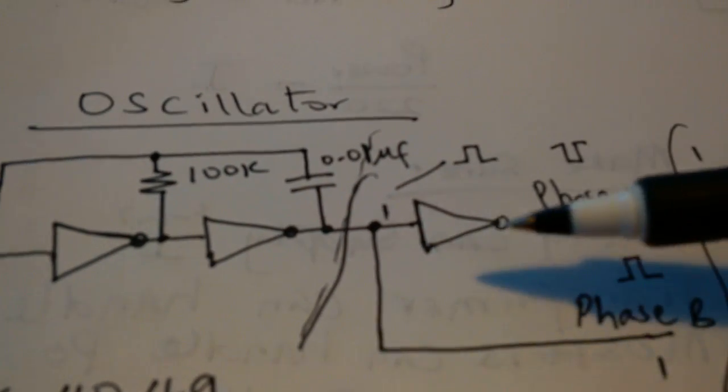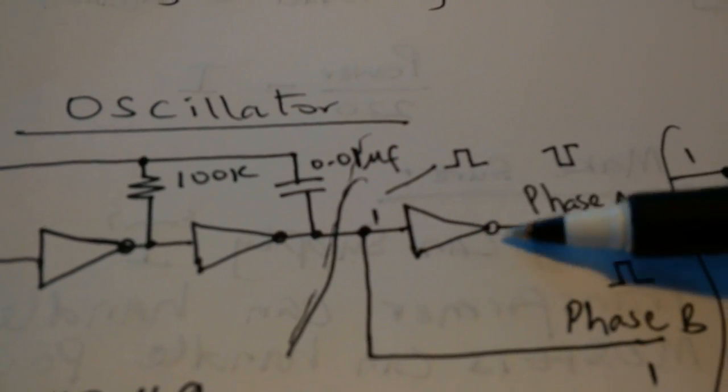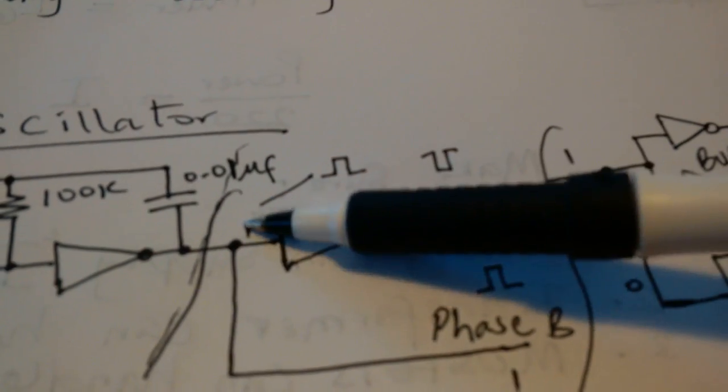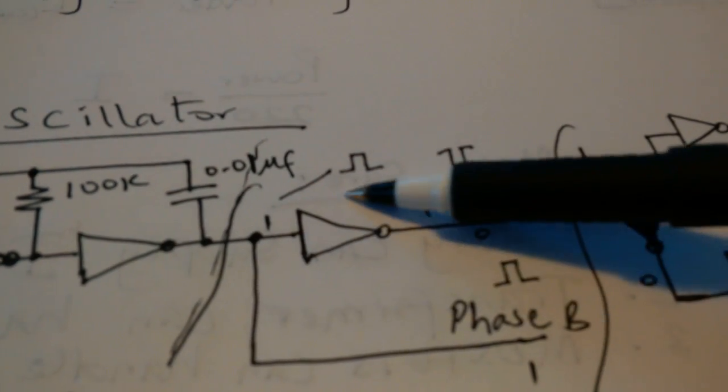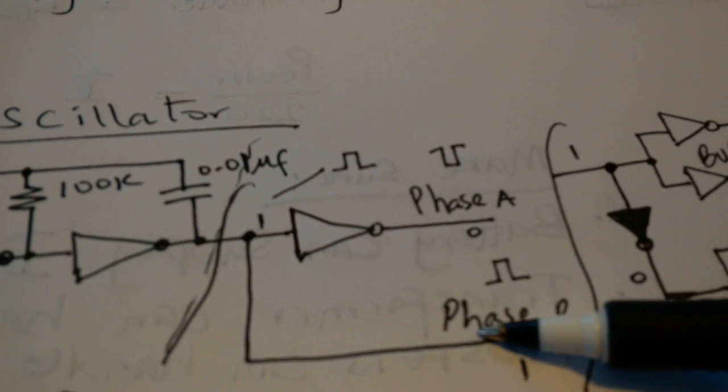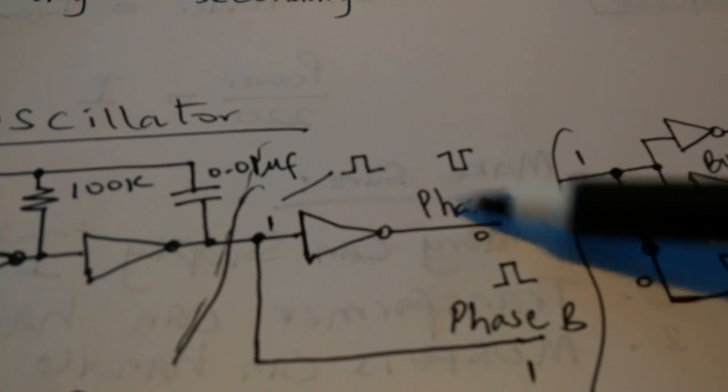For this circuit, when this output is one, this inverter here will change the signal and it will be zero. And this one will show up here as one. So because it goes straight, there's no inverter in this path, but there's inverter in that path. So you have this changed.